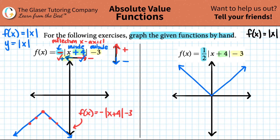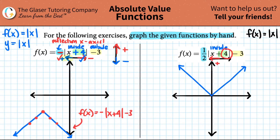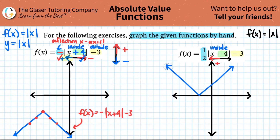Since it's not just a negative, I can't simply reflect — I'll do the inside function first. Inside functions are horizontal shifts. As stated before, a positive inside means going left, and it's plus four, so I'm going to the left four times. I grab my graph and move left: one, two, three, four. That shift is done.